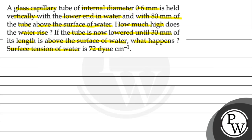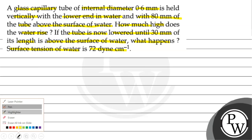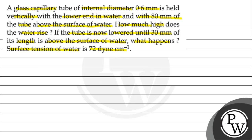The surface tension of water is 72 dynes per centimeter. So the question has two cases: first case, find how high water rises when 80 mm of tube is above water surface; second case, tube lowered to 30 mm above water surface — find what happens. Now we can see which key concepts can be used.